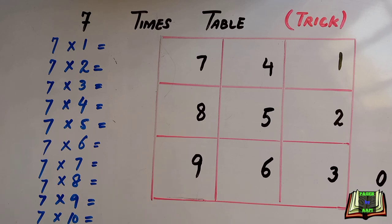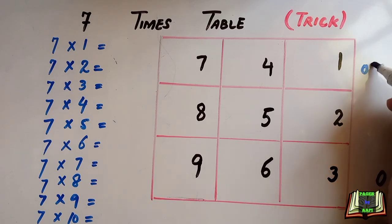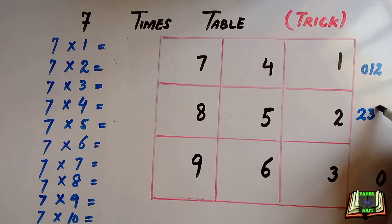Now for the 10s digit, I am going to arrange the numbers row-wise. In the first row I will write 0, 1, 2. In the second row I will write 2, 3, 4. And in the third row I am going to write 4, 5, and 6.